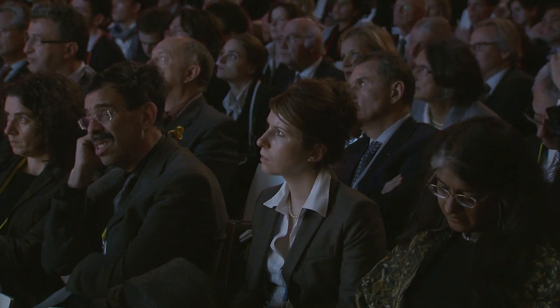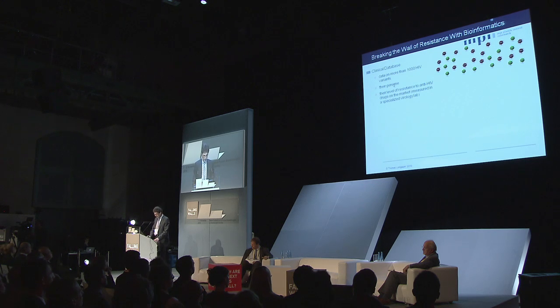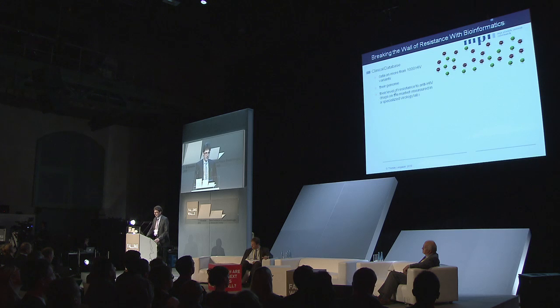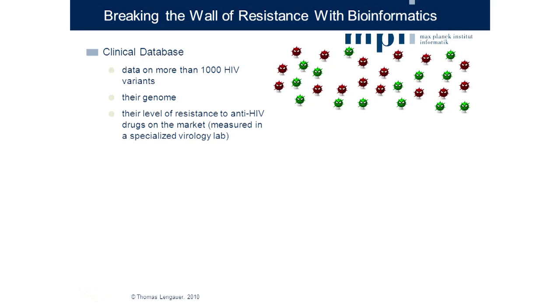That's what we're doing. Our basis is a database of clinical information on more than a thousand HIV variants. All of these variants are characterized in two ways: by their genome — the genotype — and by their level of resistance against any of the drugs in our study. Here is a pictorial image: these are a thousand viral variants; the red ones are resistant against the given drug, and the green ones are susceptible. We have one of these colored pictures for each of the one to two dozen drugs in our study.